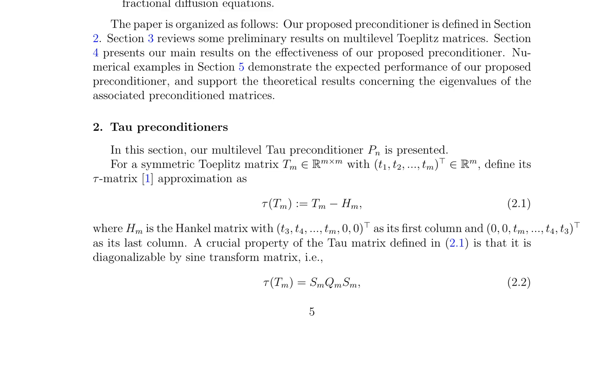Therefore, alternative preconditioning strategies must be explored to effectively accelerate the MINRES algorithm. This study makes two primary contributions: first, it proves that the ideal preconditioner can lead to a MINRES convergence rate independent of the mesh size for the space fractional diffusion equation; second, it introduces a multi-level tau preconditioner P_N as an improved alternative to the ideal preconditioner, which balances preconditioning effectiveness with computational feasibility. Notably, this study is the first to demonstrate the optimality of tau preconditioning for symmetrized multi-level Toeplitz systems, achieving mesh-independent MINRES convergence.